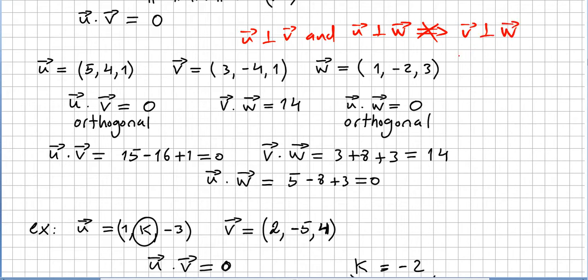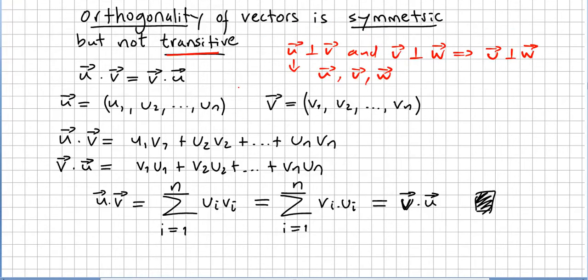So we just saw that orthogonality of vectors is symmetric, but not transitive.